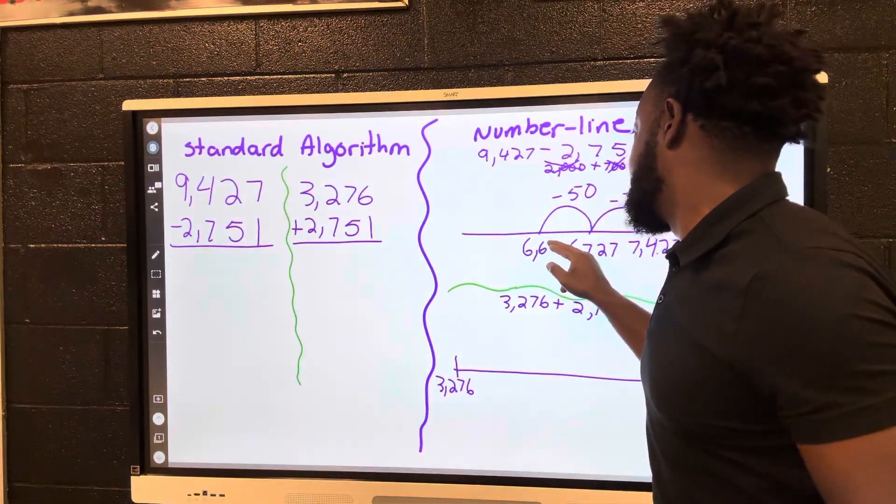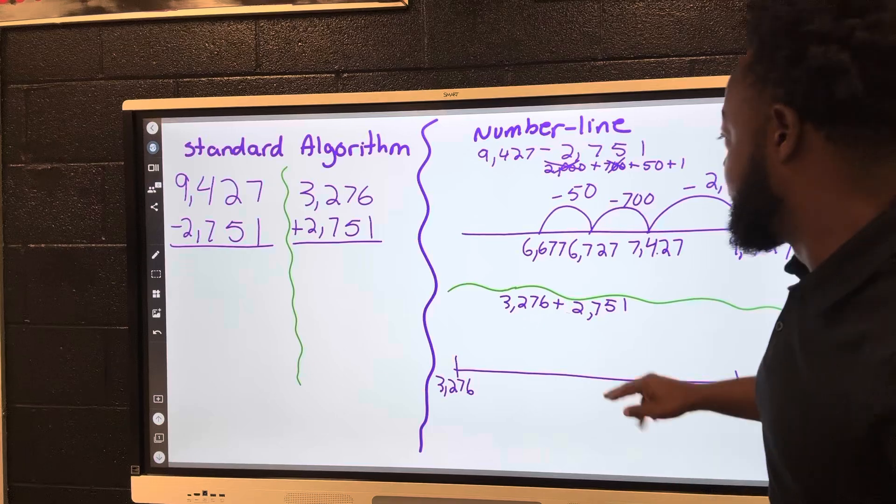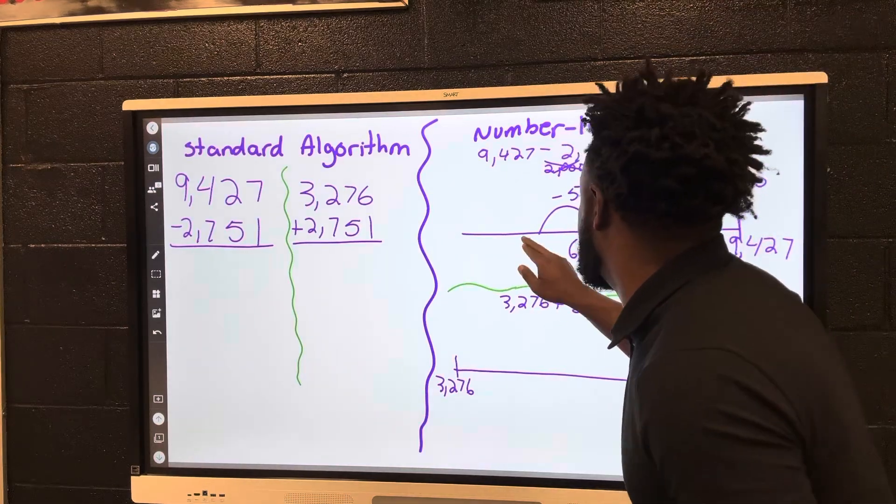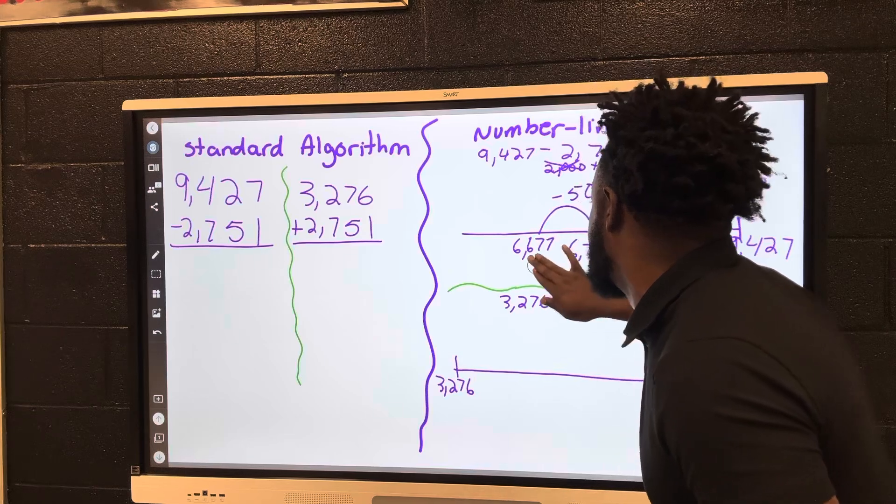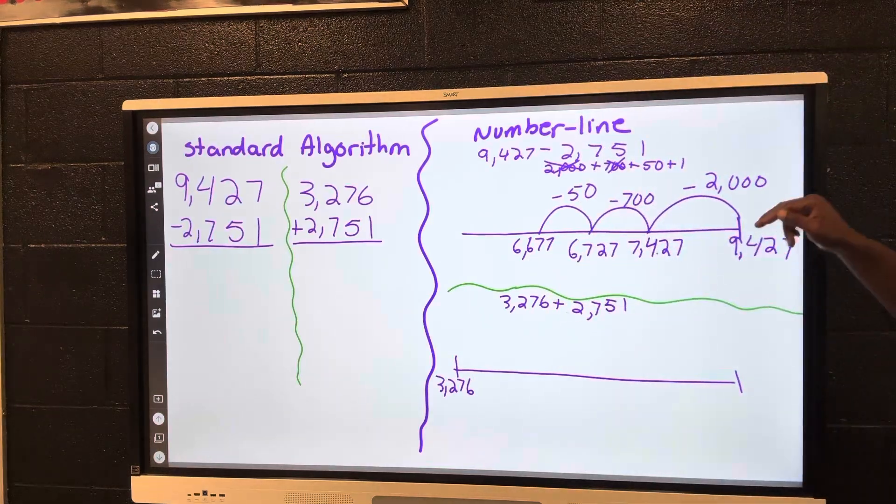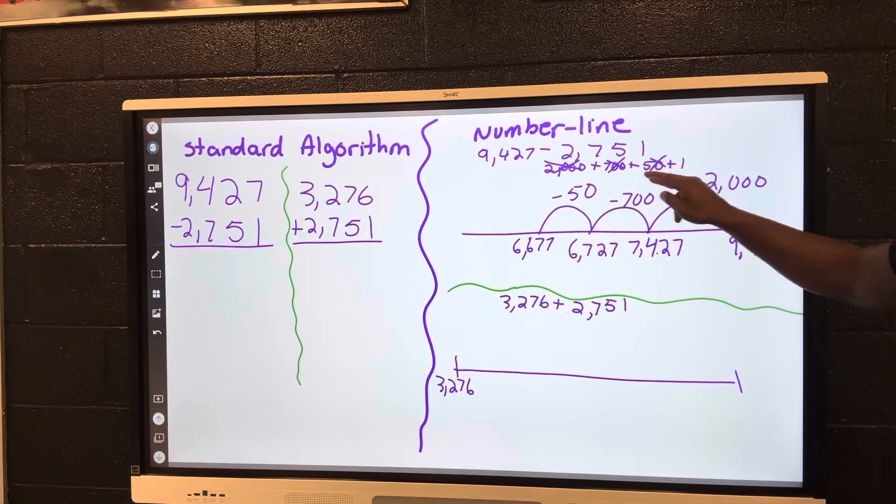Minus 1, which is 6,676, which would be your answer. So what we did was subtracted each place value.